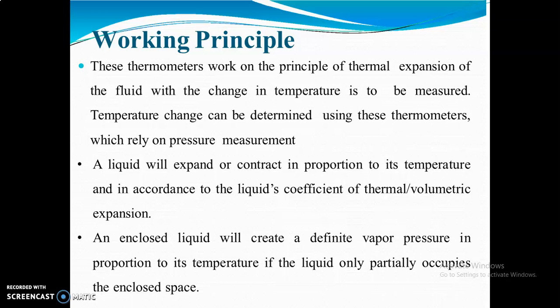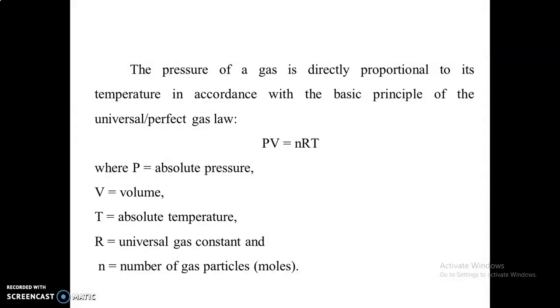For pressure measurement, we use the Boudin tube. The liquid will expand or contract in proportion to its temperature in accordance with the coefficient of thermal expansion. An enclosed liquid will create a definite vapor pressure in proportion to temperature, and the liquid only partially occupies the enclosed space. The pressure of the gas is directly proportional to temperature. The basic principle is the gas law: PV = nRT, where P is absolute pressure, V is volume, T is absolute temperature, R is the universal gas constant, and n is the number of gas particles.